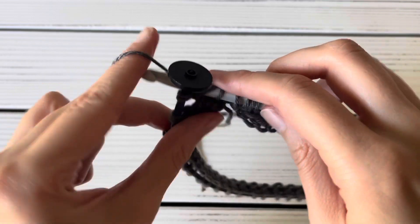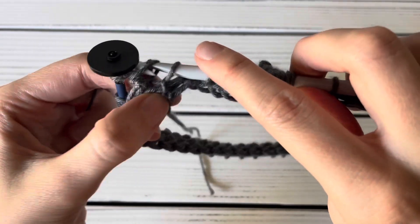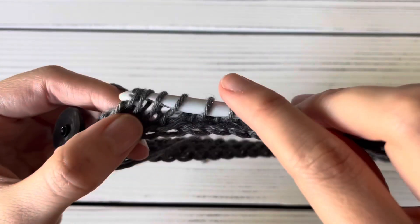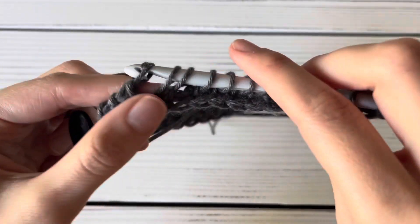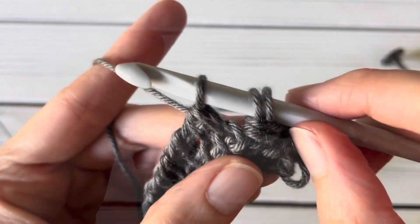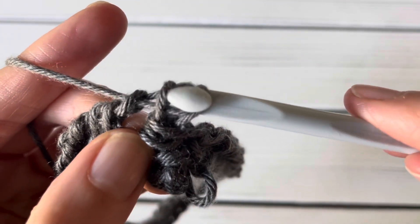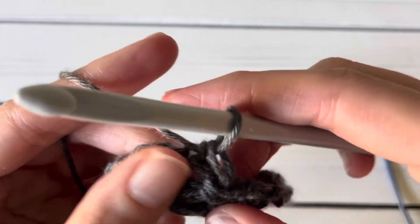Now work the return pass by yarning over, pulling through two loops all the way across. I'm going to continue doing that until I am done with this row. Almost done with the row, but make sure you do not yarn over and accidentally pull through three since those two loops are very close to each other.